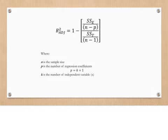Where n represents the sample size, or number of variables, p is the number of regression coefficients. The equation for p is k plus 1, where k is the number of independent variables. The number of independent variables isn't the number of values in the data set, it's the number of x variables.